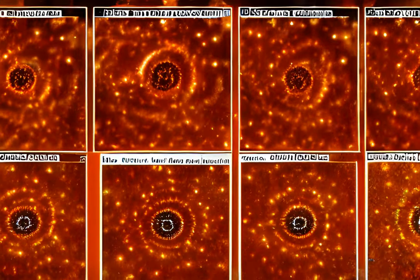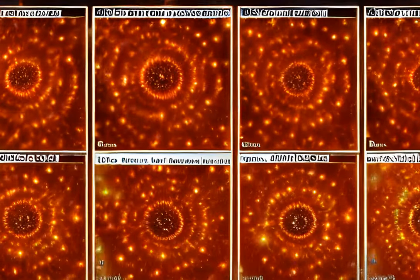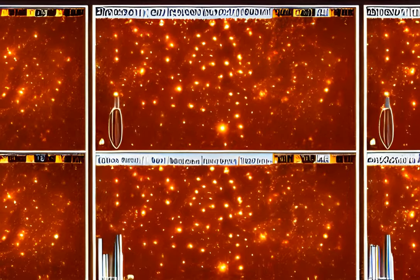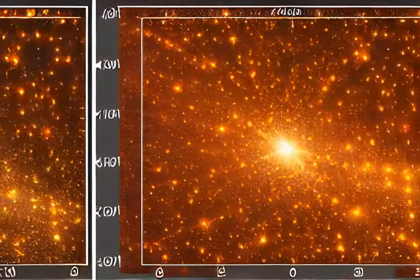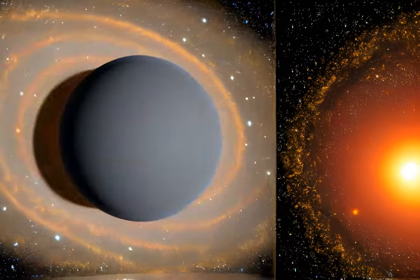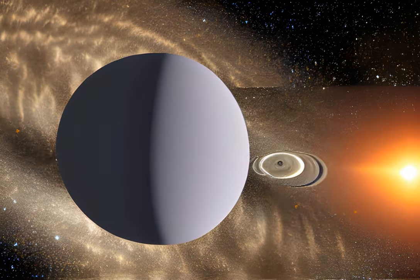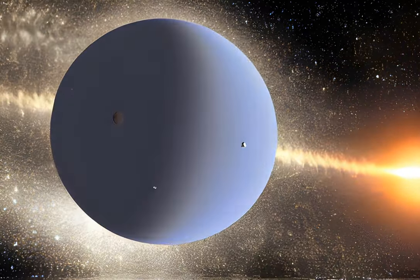The scientists use radial velocity measurements and other stellar activity indicators to confirm the existence of the two planets circling around HIP 104,045. This is a common method used to detect exoplanets, and it involves measuring the star's wobble caused by the gravitational pull of planets orbiting around it.